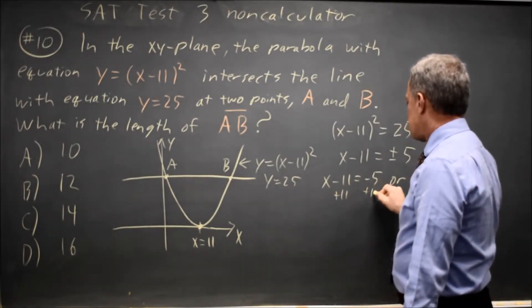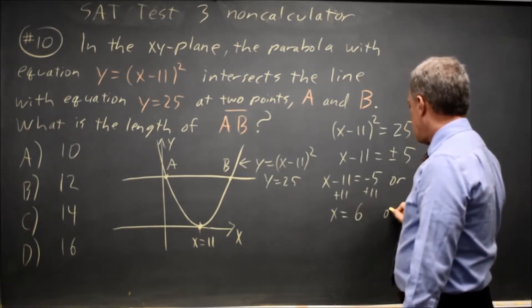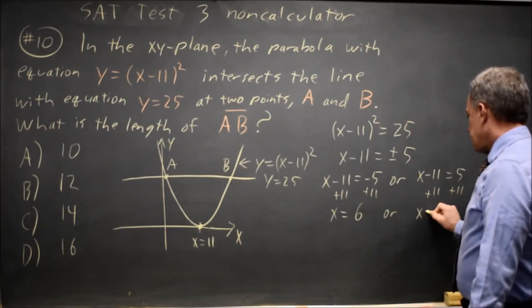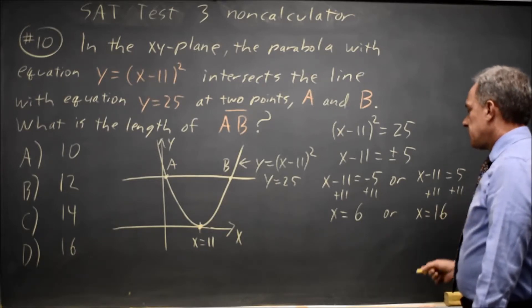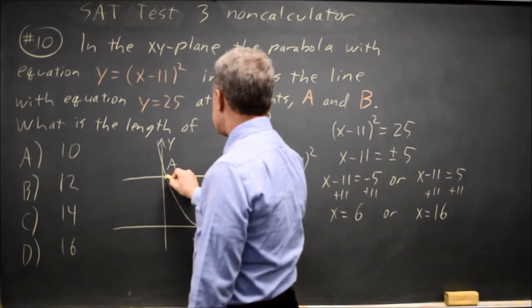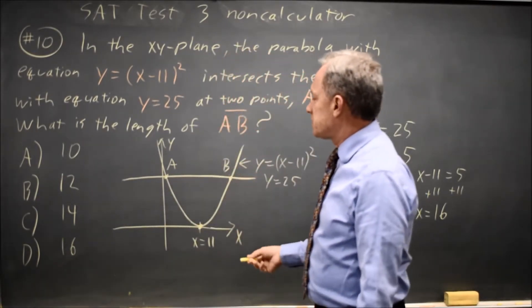Add 11 to both sides, and I get x equals negative 5 plus 11 is 6. Or add 11 to both sides, x equals 5 plus 11 is 16. The difference between this point with x coordinate 6 and this coordinate with x coordinate 16, that distance is 10.